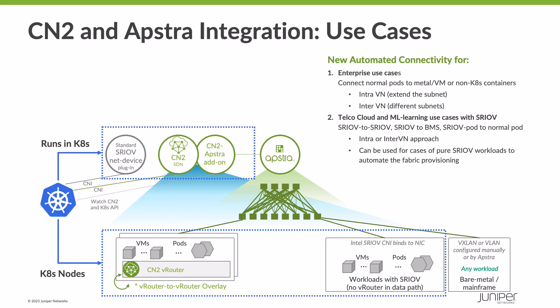That could be a lot of work. Another approach, which is still a lot of work, is to use two different virtual networks and have these networks exchange routes and reachability information so that the applications can reach each other. Now, all of this is done automatically with a few simple configurations inside of the Kubernetes environment with the CN2 AppStra add-on. The other use case relates to SRIOV.